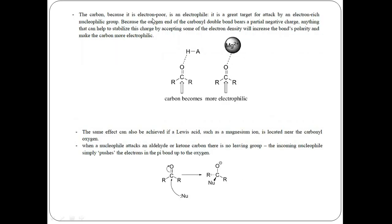Because the carbon is electron poor — the oxygen atom attracts all the electrons towards itself — the carbon atom is electrophilic in nature. It is therefore a great target for attack by an electron-rich nucleophilic group. The carbonyl carbon bears a positive charge and acts as an electrophile, making it highly susceptible to attack by an electron-rich nucleophilic group.